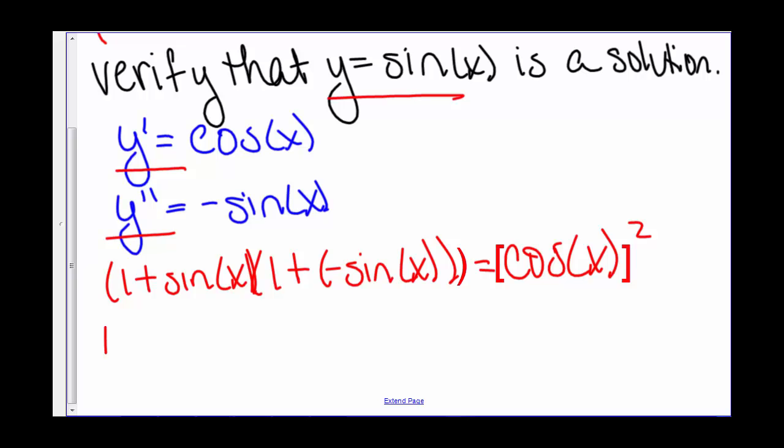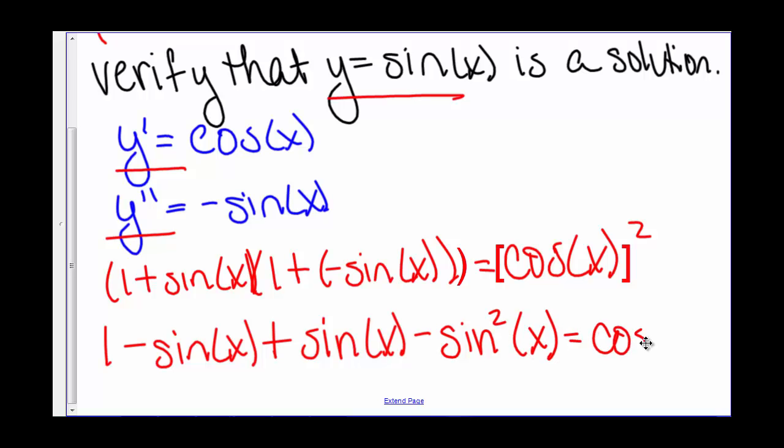So we have 1 - sin(x) + sin(x) - sin²(x) equals cos(x).